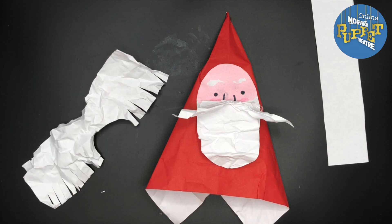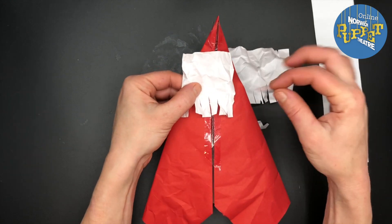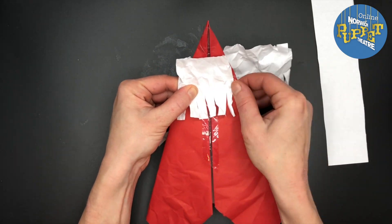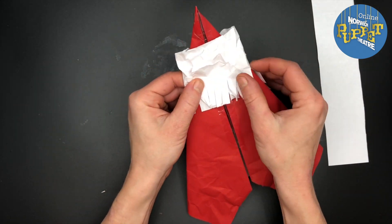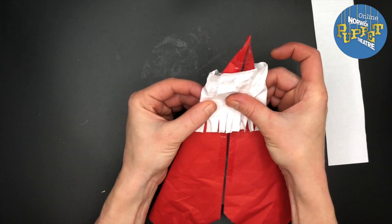Lay the paper so that the semi-circle frames Santa's face, then turn your puppet over and fold the paper strip round. Secure it with tape. Then bring the other bit round and tape that too.